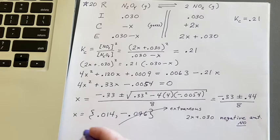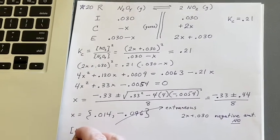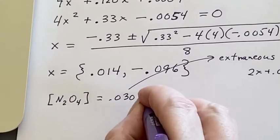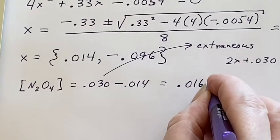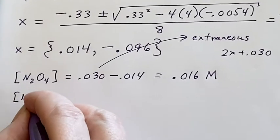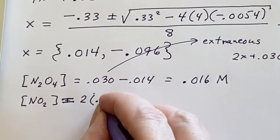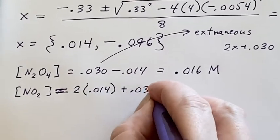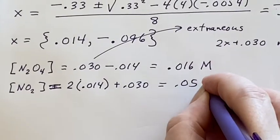So now I know what x is and I can say the concentration of the N2O4 is the 0.030 minus the 0.014 and it should be 0.016 molar. The concentration of the NO2 should be 2 times the 0.014 and then plus 0.030 and we'll get 0.058 molar.